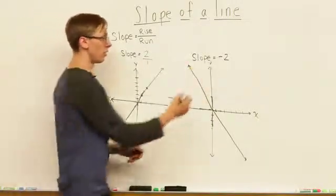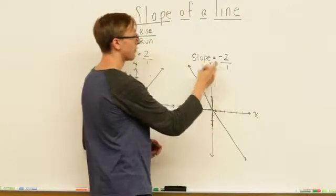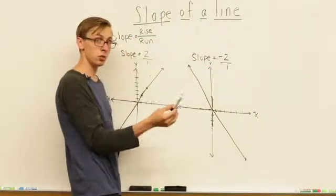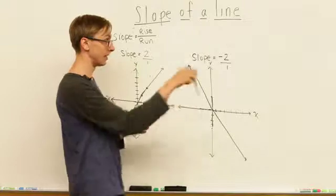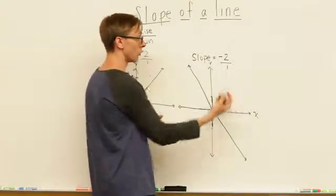And same thing over here, we're over 1. So we have a rise of negative 2, or we're falling 2, we're going down 2 and we're going over 1.